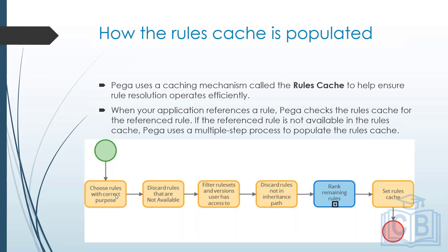This is an elimination process. Suppose you start with 20 rules with the correct purpose — by the time the cache is set you might end up with just four or five. The second step discards unavailable rules. The third step filters rule sets and versions the user has access to — again some are eliminated. The fourth step discards rules not in the inheritance path.